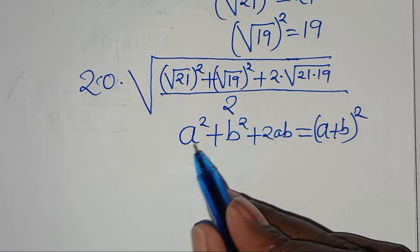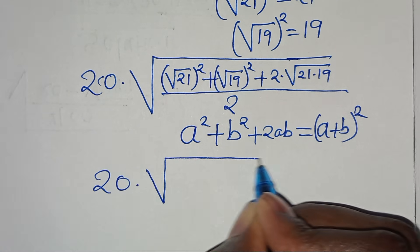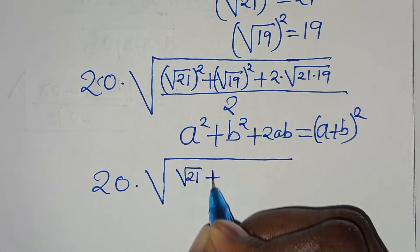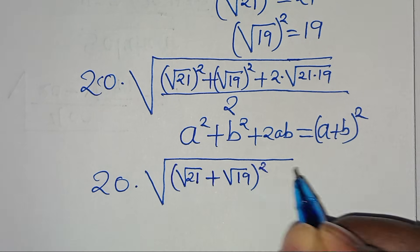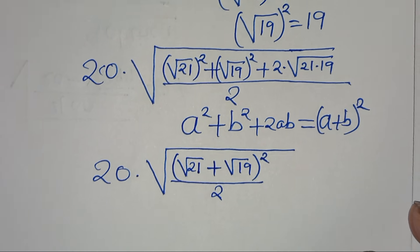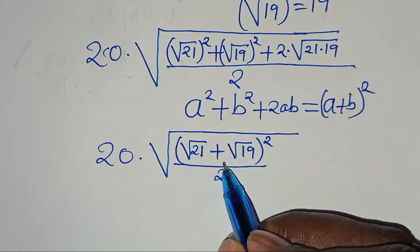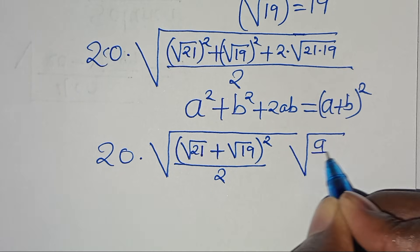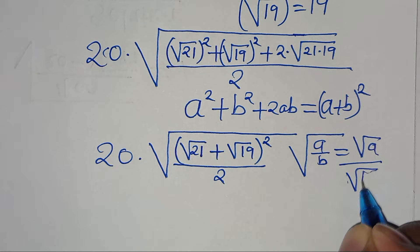Applying this algebraic identity, we have 20 times the square root of: square root of 21 plus square root of 19, everything raised to the power of 2, divided by 2. The expression with the square root of 21 plus square root of 19 to the power of 2 over 2 is in the form of square root of a over b, which we can express as square root of a over square root of b.